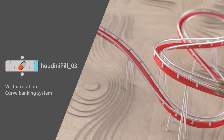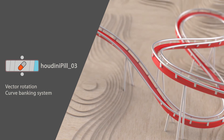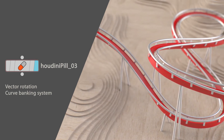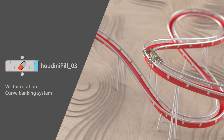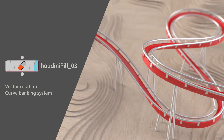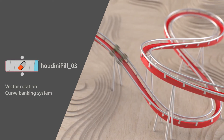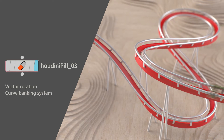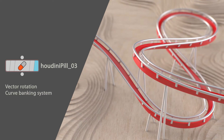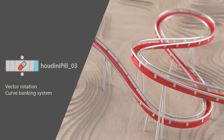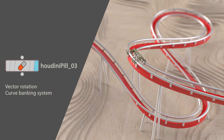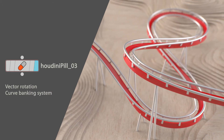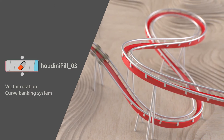Hello, I'm Javier Toledo from Rush VFX. Welcome to this Houdini Pill. Today we're going to learn how to rotate vectors creating a curve banking system. The idea is that the curve will detect a left or a right turn and it will rotate accordingly around the curve.